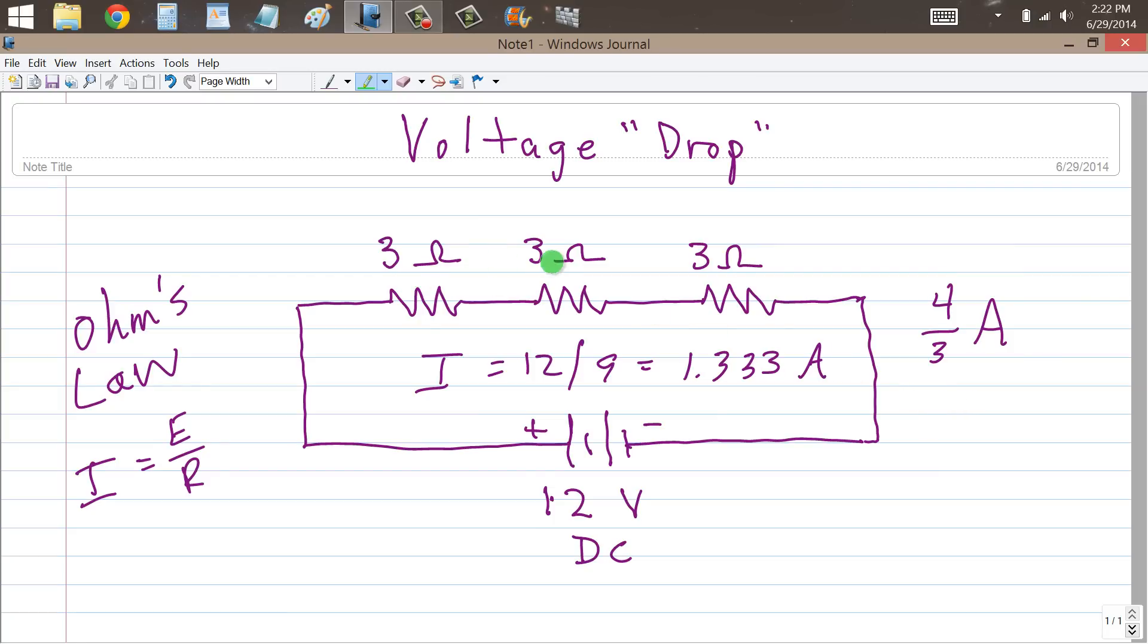Now, what is the voltage across each of these resistors? Each resistor carries 4 thirds of an amp. Remember that the formula for Ohm's law, another formula for Ohm's law is voltage equals current times resistance. In this case, it's 4 thirds, the current through each resistor. Remember that in a series circuit, the current is the same all the way around. No matter what these resistances would be, the current through each one of them is the same. So, we have 4 thirds of an amp flowing round and round. 4 thirds of an amp times 3 ohms equals 4 volts. 4 volts across each one of these resistors.